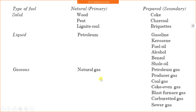Natural gas mostly consists of methane and ethane. Petroleum gas is obtained from petroleum products; producer gas is obtained from coal by burning; coal gas is obtained from burning of coal; coke oven gas is obtained from burning of coke; blast furnace gas is obtained from the blast furnace; and sewer gas is obtained from the degradation of sewer material.